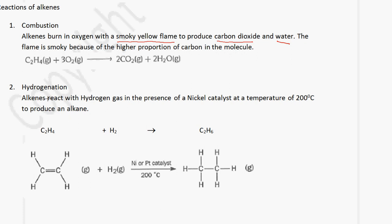The next type of reaction is hydrogenation. Alkenes react with hydrogen gas in the presence of a nickel catalyst at a temperature of 200 degrees Celsius. You need to be able to recall the reaction conditions: a nickel catalyst at a temperature of 200 degrees Celsius. In this example, we have ethene; ethene plus hydrogen gives you ethane.